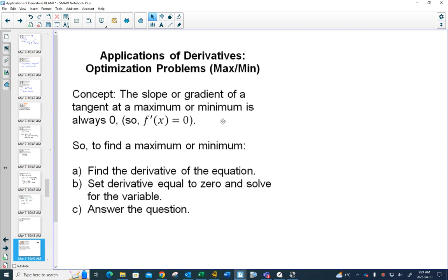Optimization problems really connect to what you're doing in graphing, because if you want to find a maximum or a minimum, we've already learned in graphing that's always when the slope of the tangent is zero. So if you find your derivative and set it equal to zero, you can find a maximum or minimum. All max or min problems, you'll find the derivative, set it equal to zero, and then be able to answer the question.